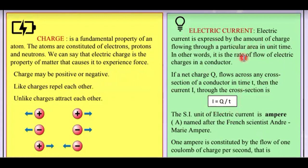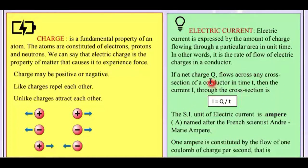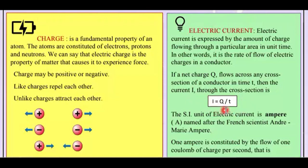So the definition above is explained by a formula. The charge Q is how much charge flows in a conductor. If we take any cross-section of a conductor in time t, then the current I at that conductor is the charge flow in that time. The formula is I = Q ÷ t.